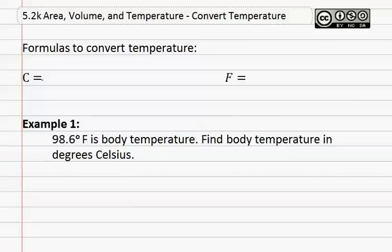When we want Celsius, we use the formula: five times the quantity F minus thirty-two, all divided by nine. You take the Fahrenheit, subtract thirty-two before multiplying it by five, then divide that number by nine. Use this formula if you are looking for Celsius.